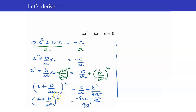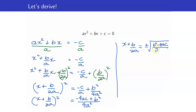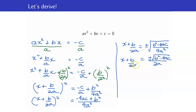Using the square root property, I will remove the square by taking plus or minus the square root of this expression. We now have x plus b over 2a is equal to plus or minus the square root of b squared minus 4ac all over 4a squared. Take note that when you get the square root of numerator and denominator, the denominator will just become 2a. So I have plus or minus the square root of b squared minus 4ac over 2a. Therefore, to solve for x, I transpose negative b over 2a.